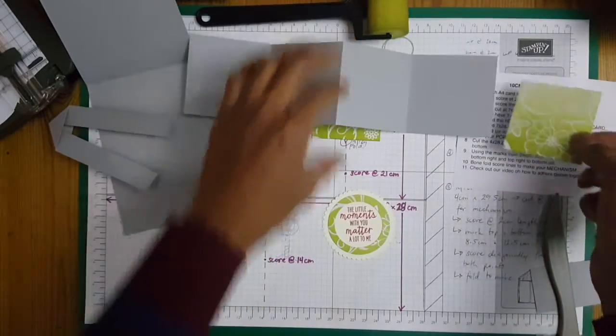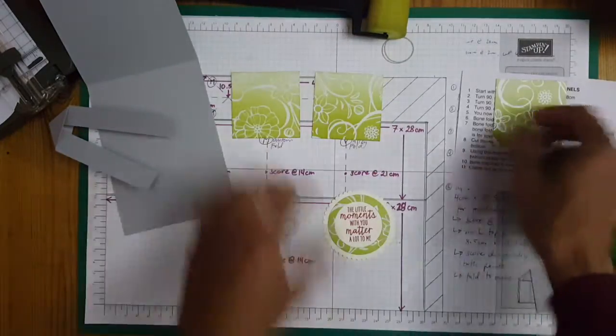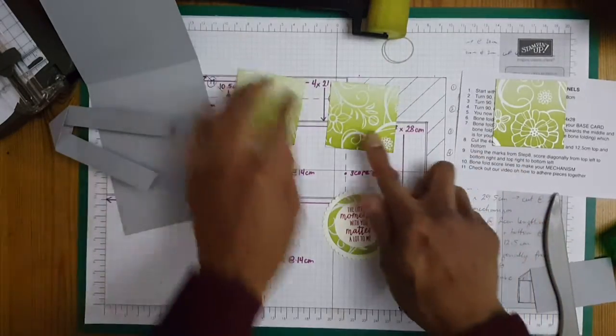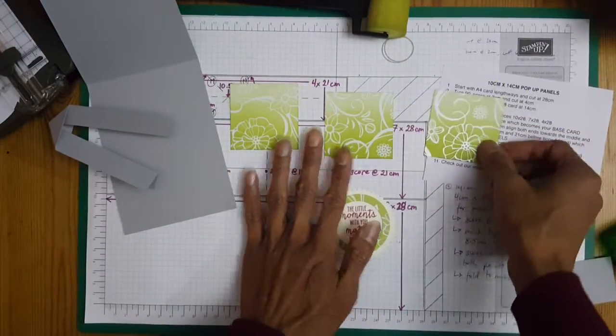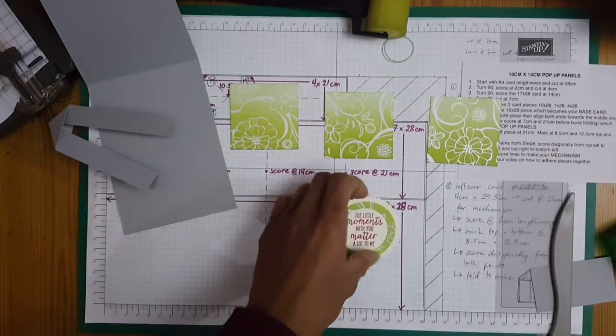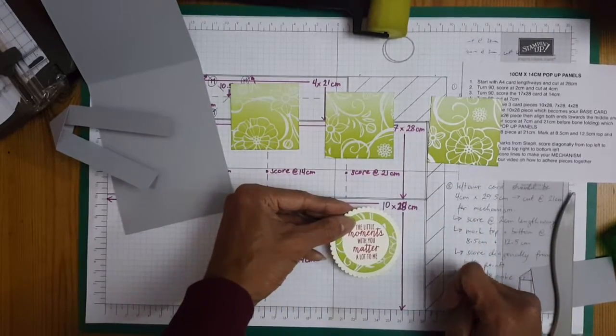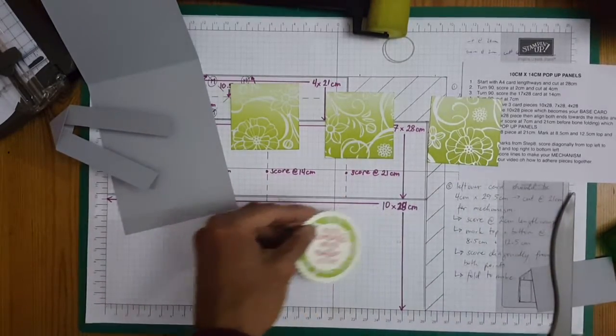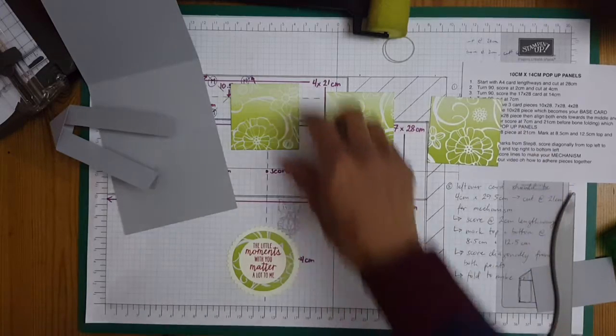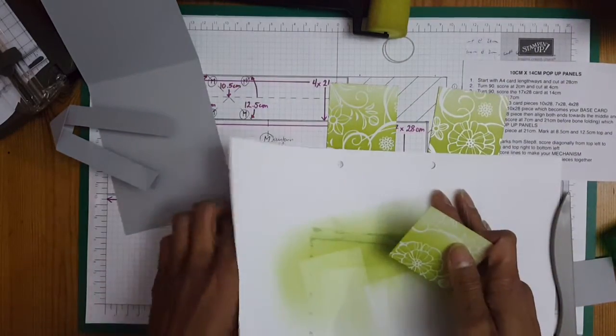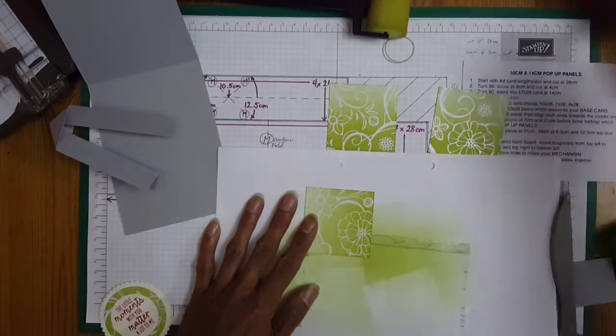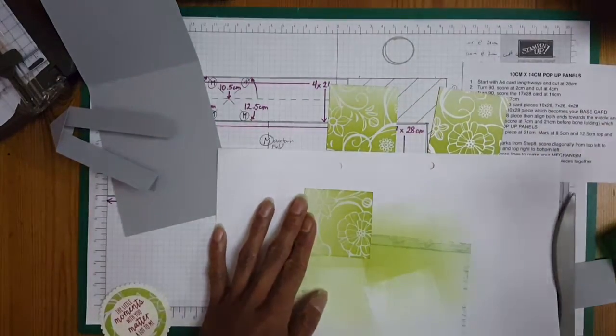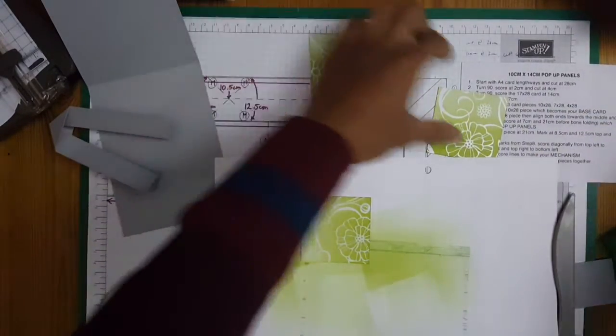And with the Irresistibly Floral DSP I've actually used the sponge daubers, just to color in the background. So with the sponge daubers I tend to work on one side. So if I just quickly show you.